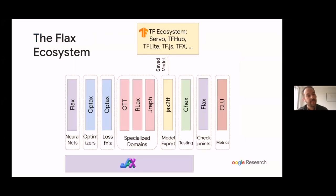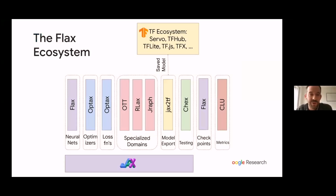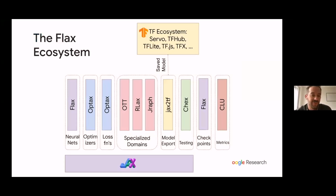Here's a visualization of the JAX ecosystem that we recommend as the Flax team. It's opinionated — we only mention libraries that fit our philosophy and work well together. At the bottom is JAX, and built on top are verticals: Flax for neural networks, Optax for optimizers and losses.